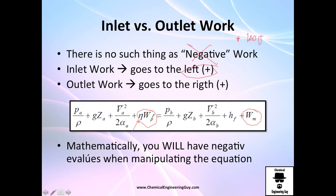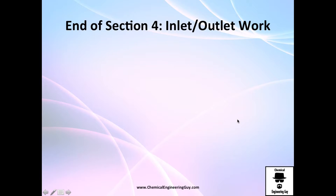Notice why efficiency appears on the pump side but not on the turbine side of the equation. This covers the typical Bernoulli equation parameters, including how inlet and outlet work function. We are now only left with the friction loss term to discuss.